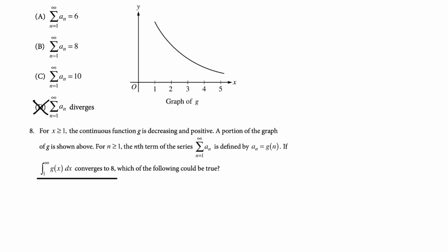Then what I'm going to do is I'm just going to draw some rectangles. So I'm going to draw rectangles starting from one going forward. These are left Riemann sums. So if we look at this, every one of those rectangles is bigger. And if the integral itself gives you eight, then the sum of those rectangles has to be bigger than eight. The only answer that we could have here is c.